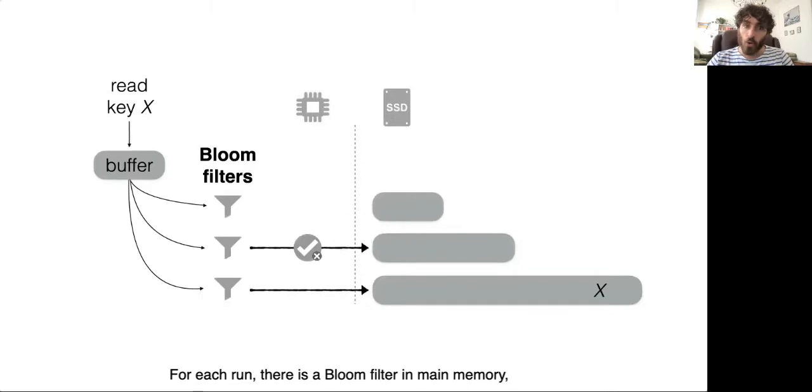For each run, there's a Bloom filter in main memory, where a Bloom filter is a probabilistic data structure used to help skip runs that don't contain the key we're looking for. While these Bloom filters are much smaller than the data set, they might lead to false positives, which cause redundant storage accesses.